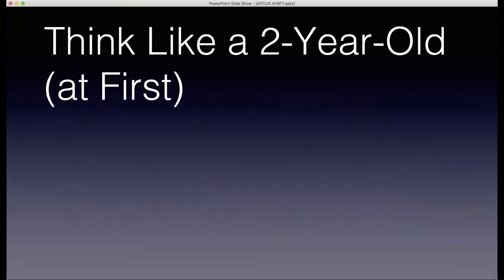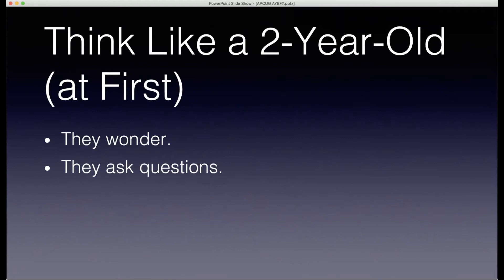I recommend you start by thinking like a two-year-old. What does a two-year-old do? They use a simplified, abbreviated version of the scientific method. They wonder about the world — they have endless curiosity. How do they fulfill that curiosity? They ask questions: What's inside this box that causes it to make that sound? Where do babies come from? Why can't I eat ice cream for every meal? And then they experiment. My kids like to experiment by throwing things — 'Oh look, when I drop this thing, it separates into all these pieces. That's cool. It also seems to make daddy say words I don't hear very often.'